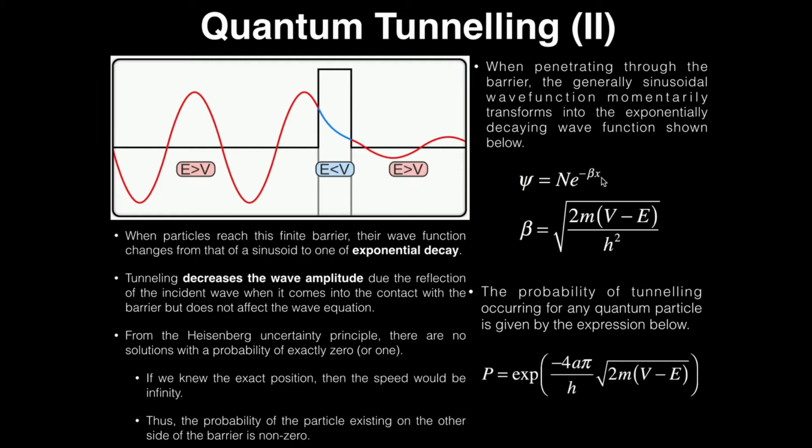This is actually the wave function right here in the tunnel in blue. We actually see the wave function ξ is equal to some n, a normalization constant, times e to the negative βx. And because this exponential function has a negative sign in there, we know it's exponential decay.